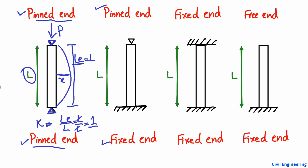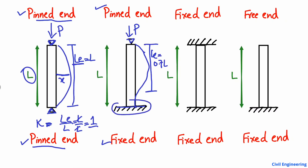Now let's consider another column with a pin end on one side and a fixed end on the other. You can see — fixed end here, pin end here. If I apply load P on this column, the column will start deforming from the pin end and buckle in a curve, but not over its whole length. Only a portion of the column buckles, so the effective length equals 0.7 times L. Therefore K equals 0.7L divided by L, which equals 0.7.